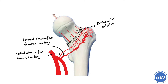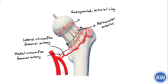These retinacular arteries supply both the head of the femur as well as the neck of the femur. The retinacular arteries form another vascular ring near the proximal end of the articular surface. This is called the subsynovial arterial ring.